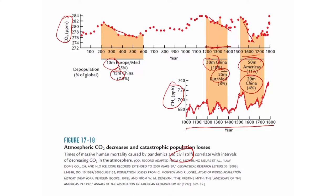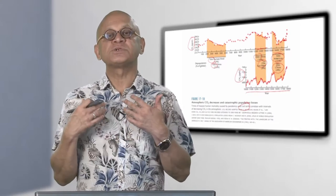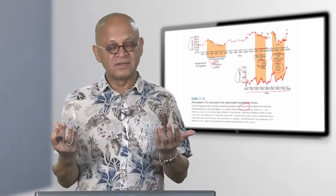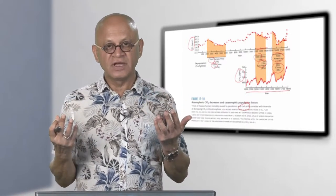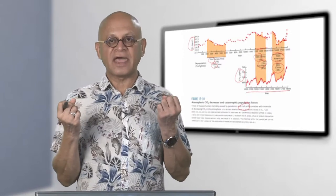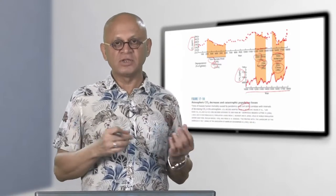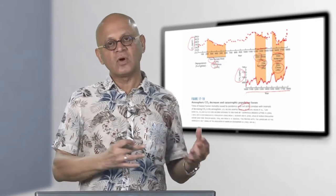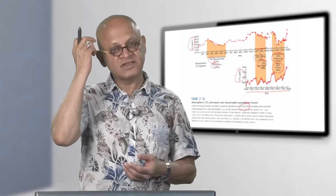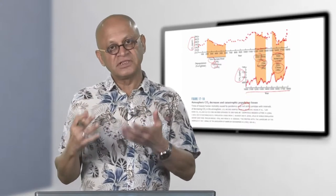These depopulation events show up as reductions in CO2 and, less systematically, in methane. When large-scale depopulation occurs and millions of people die, agricultural land is abandoned and vegetation and forests begin to regrow. Forest regrowth sequesters more carbon than agriculture, since crops are harvested and carbon is released quickly, whereas trees grow for hundreds to thousands of years and can sequester significant amounts of carbon.